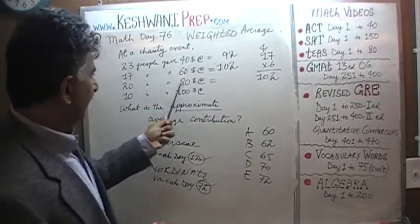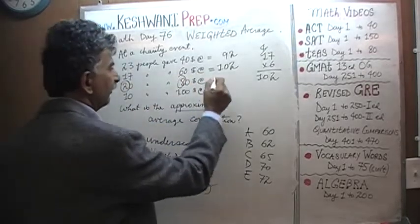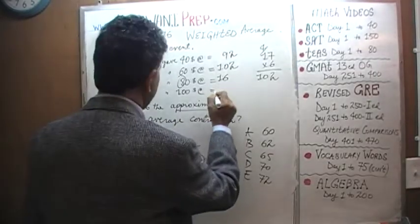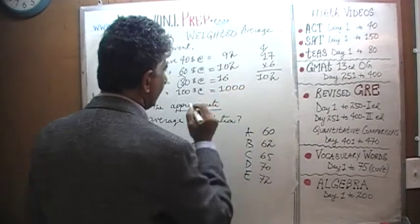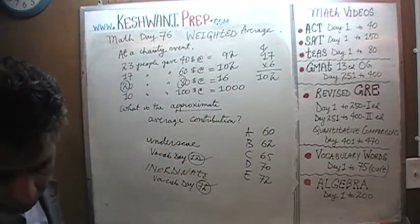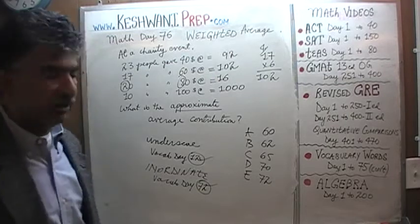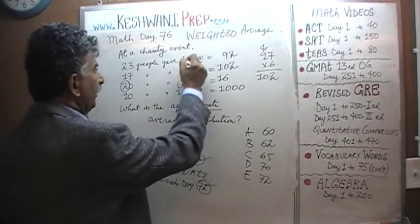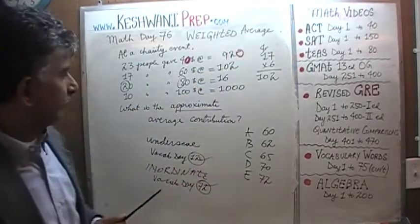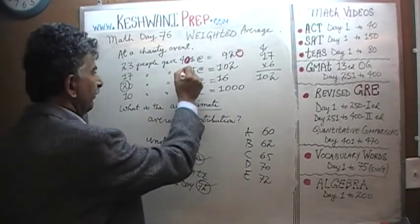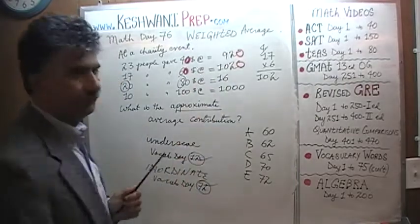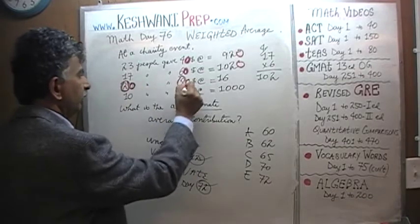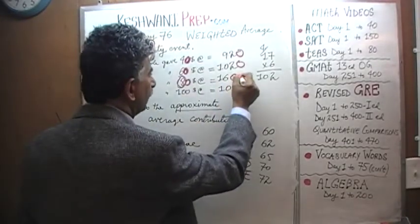2 times 8 is just 16, and then 10 times 100 is 1000. Now we're going to go back and take care of our zeros. We did 23 times 4, we left out the zero, so we stick the zero here. We did 17 times 6, we left out the zero, so you stick a zero at the end. We did 2 times 8, we left out the zeros, so we stick two zeros. That's it, we are done.